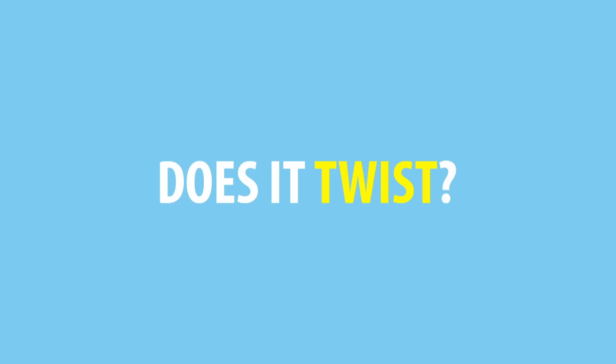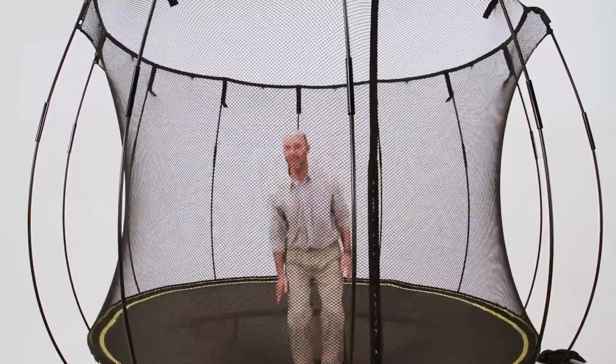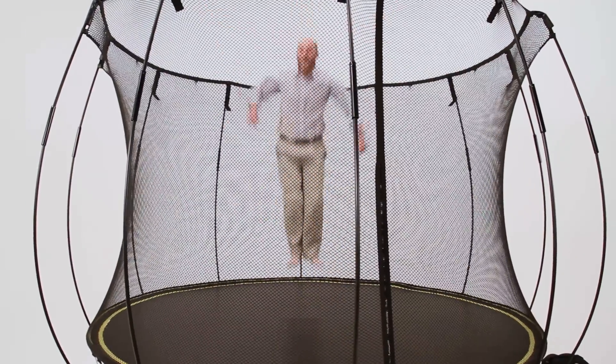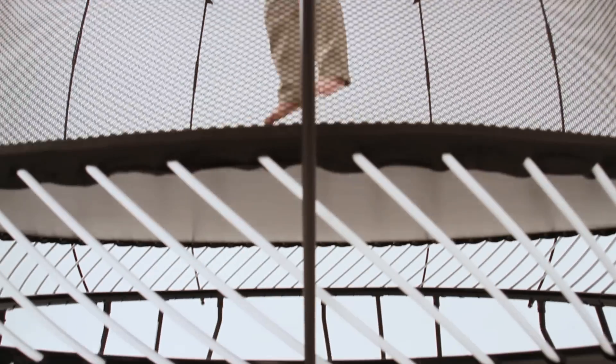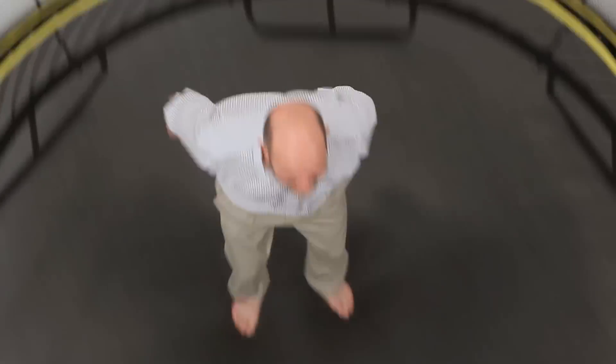If you look closely at a Springfree Trampoline when someone's bouncing in the middle, you'll see that their motion isn't up and down so much as in and out. They move in towards the center and out again, so there's not a lot of twist when they're moving in and out.